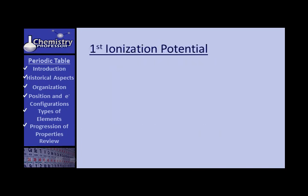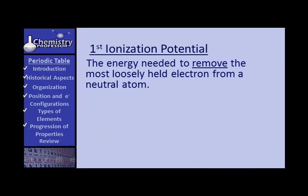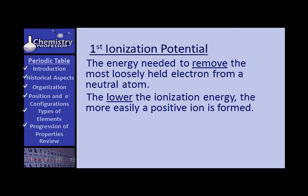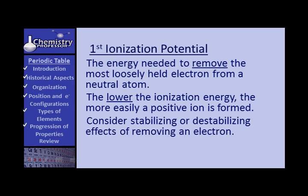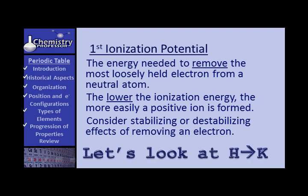First ionization potential. Now, first ionization potential is the energy needed to remove the most loosely held electron from a neutral atom. Think of it as the energy needed to remove the last electron coming in to make an atom neutral. The lower the ionization energy, the more easily a positive ion is formed. Well, think of it this way. The easier it is to take away that electron, the lower the ionization energy. And what you look at is stabilizing or destabilizing effects of removing an electron.